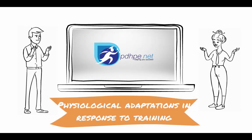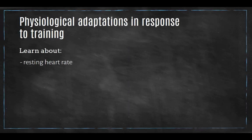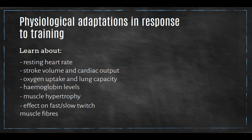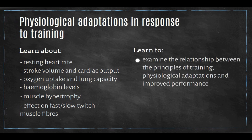Welcome to physiological adaptations in response to training. In the HSC PHPE under physiological adaptations in response to training, your syllabus lists resting heart rate, stroke volume and cardiac output, oxygen uptake and lung capacity, haemoglobin levels, and muscle hypertrophy and the effect on fast and slow twitch muscle fibres for your learn about. Learn two asks you to examine the relationship between principles of training and physiological adaptations and improved performance.